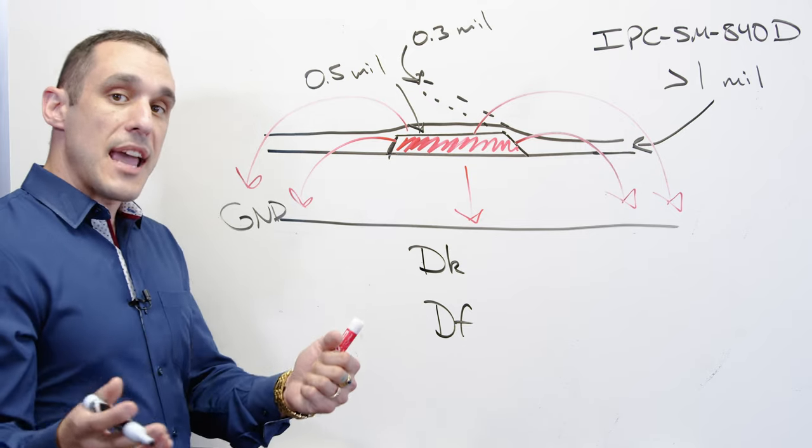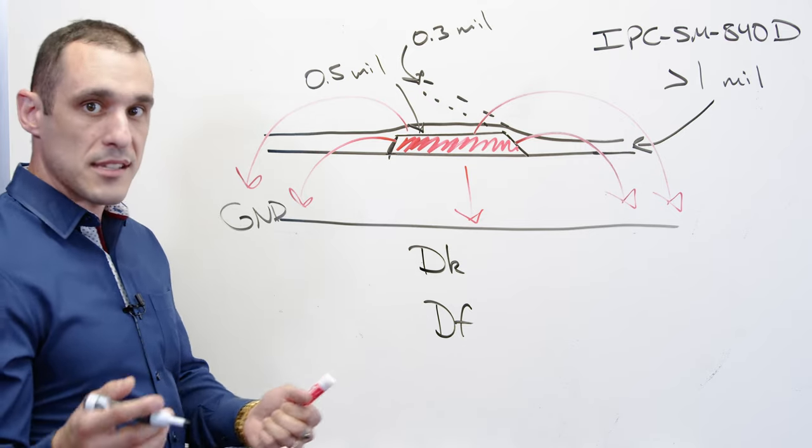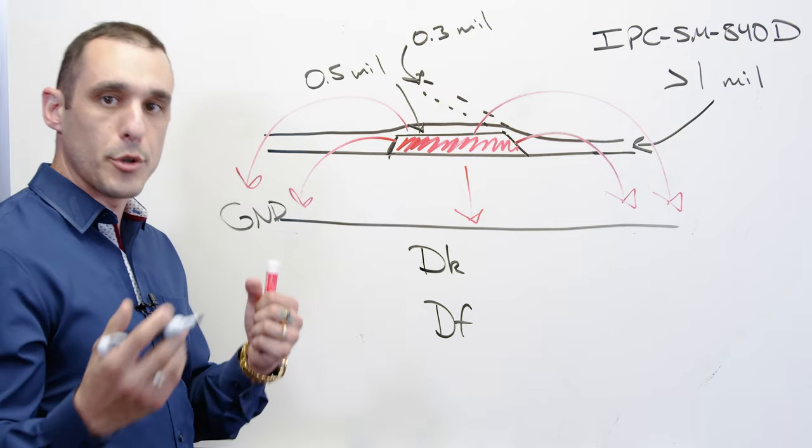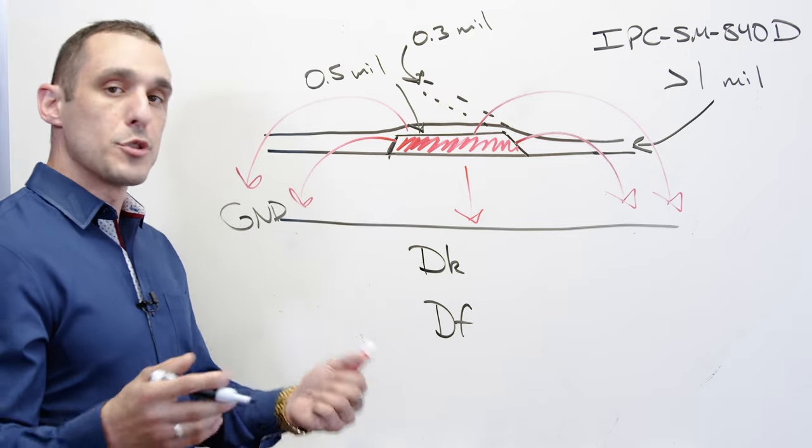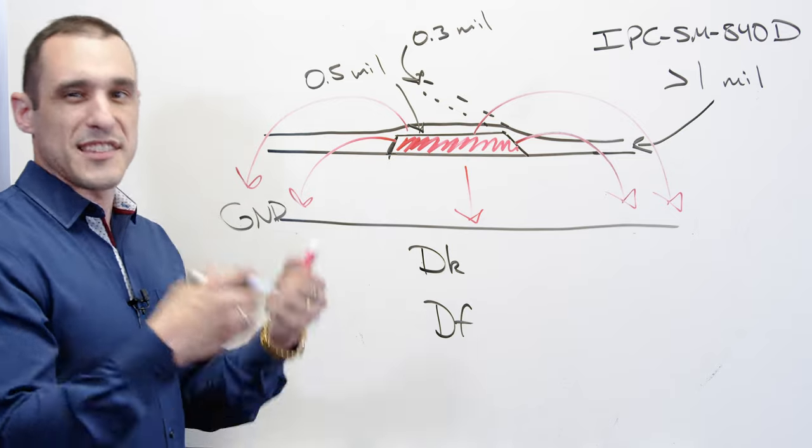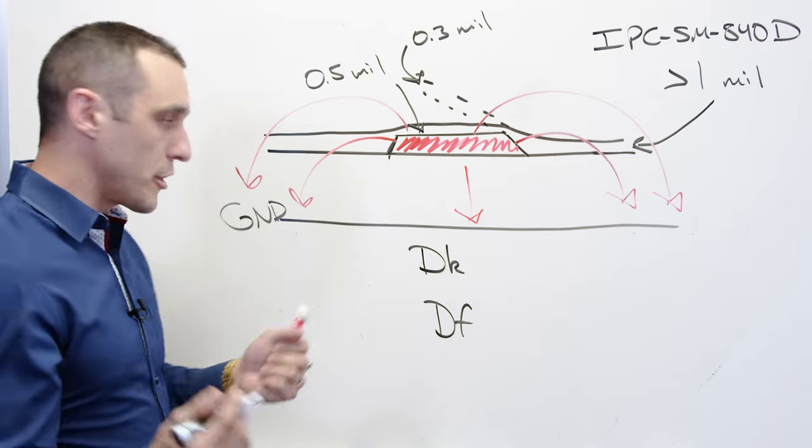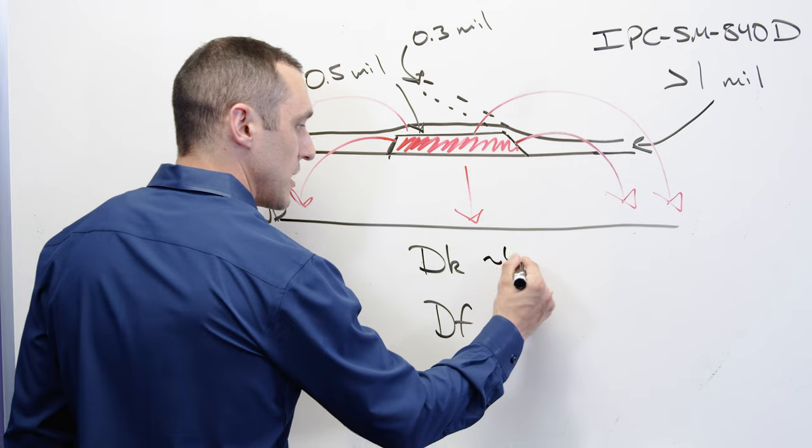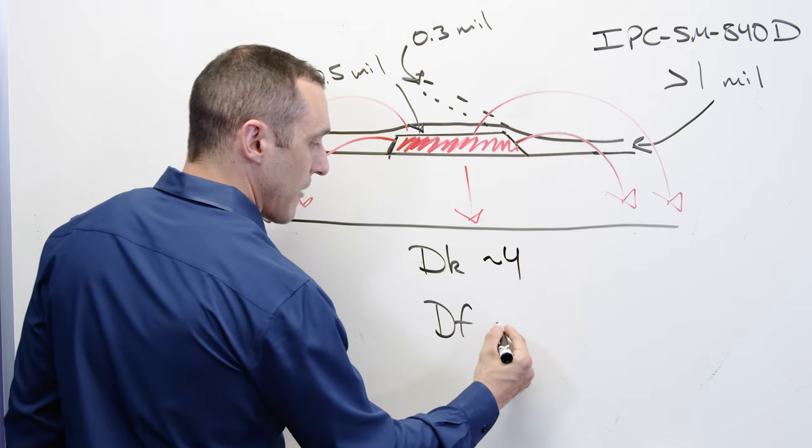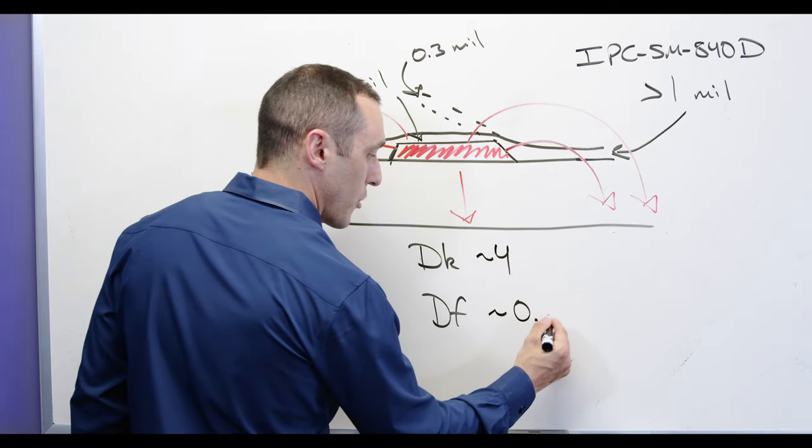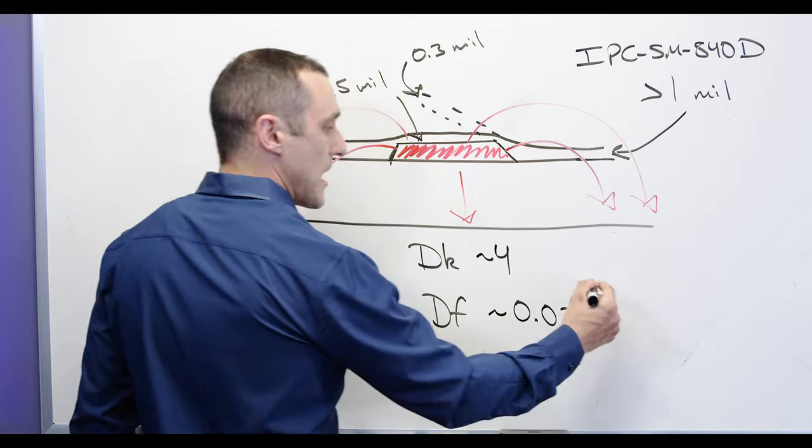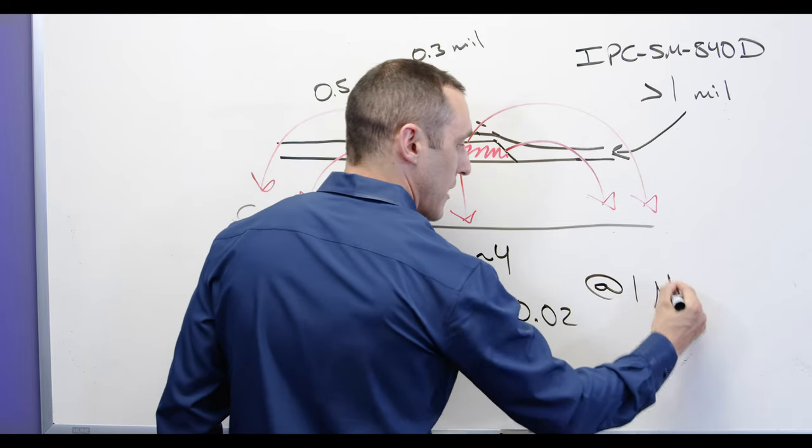There's an IPC Apex paper from 2016 and they looked at material properties in that paper for two different solder mask materials. One was a standard run-of-the-mill solder mask material with Dk of approximately 4 and then Df value of approximately 0.02 and these were tested at 1 megahertz.